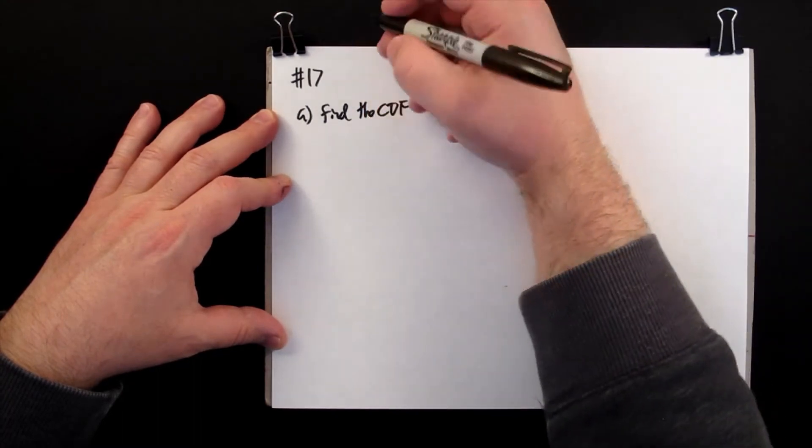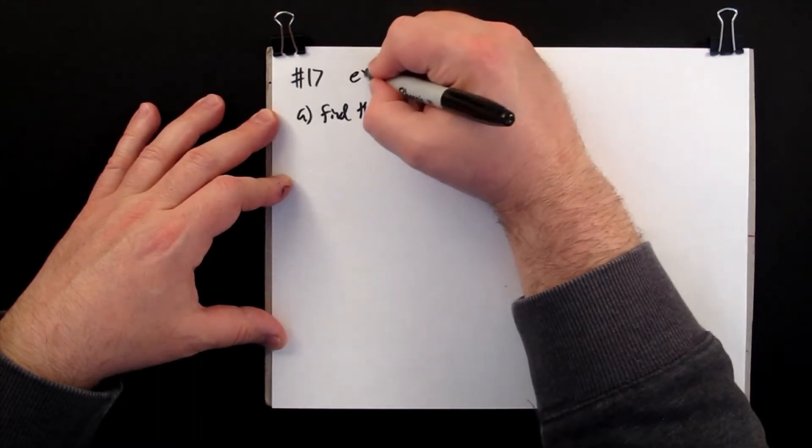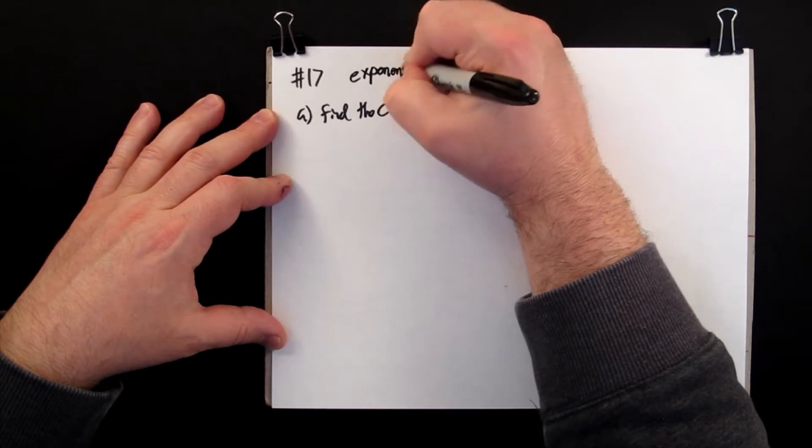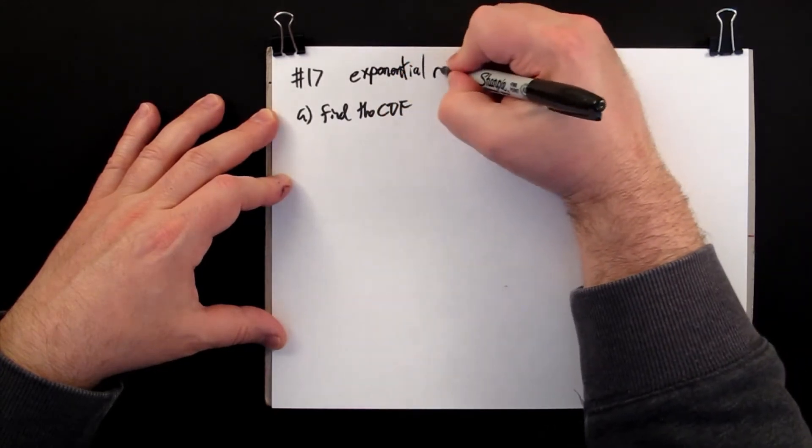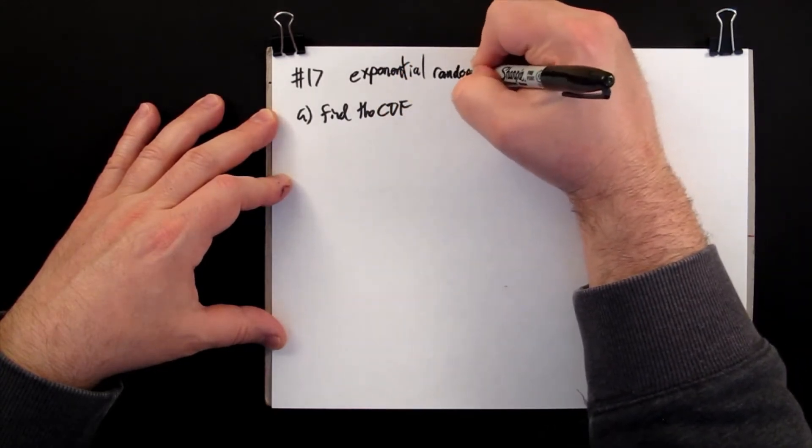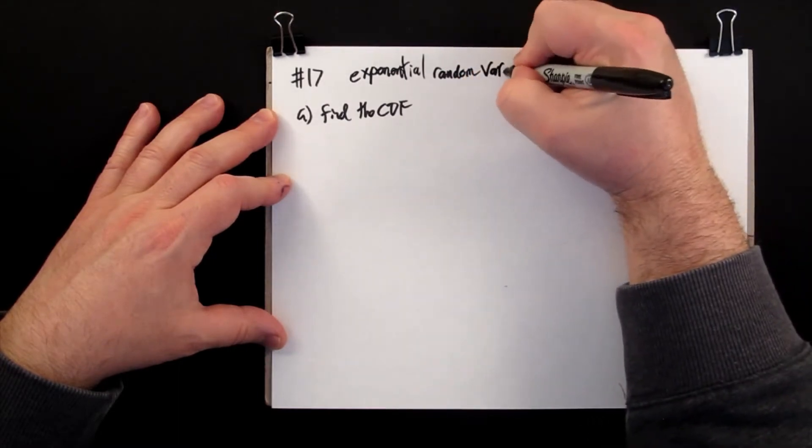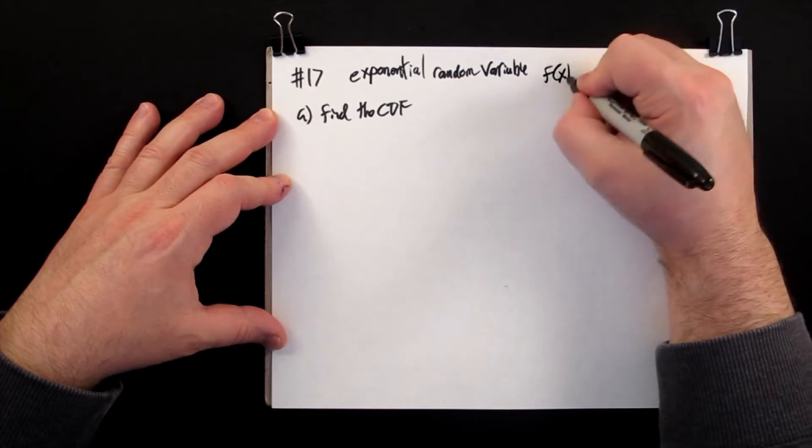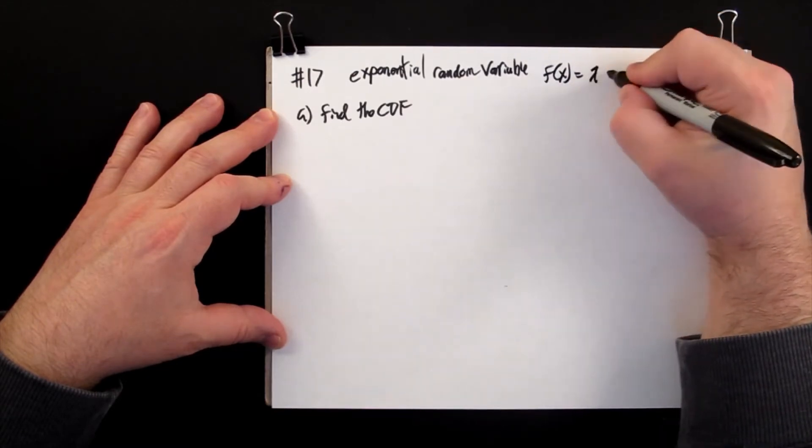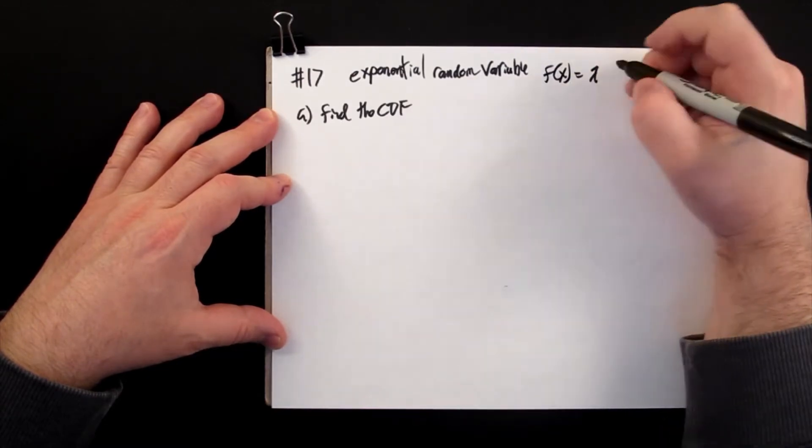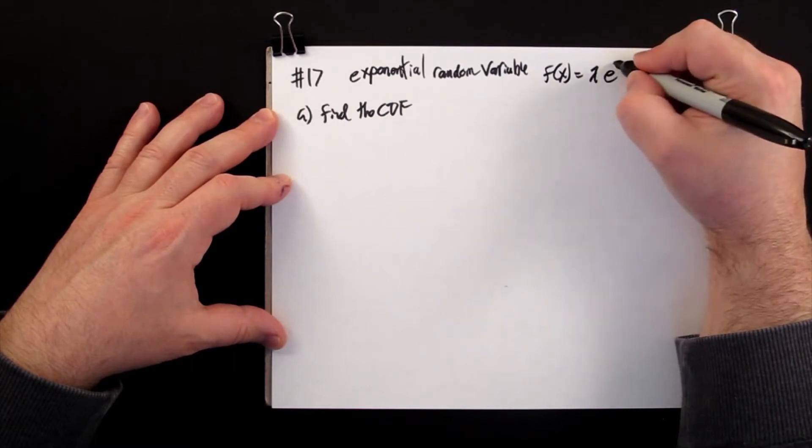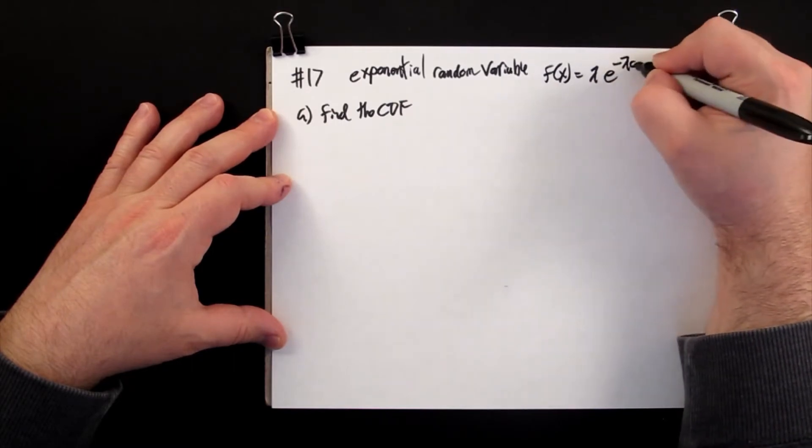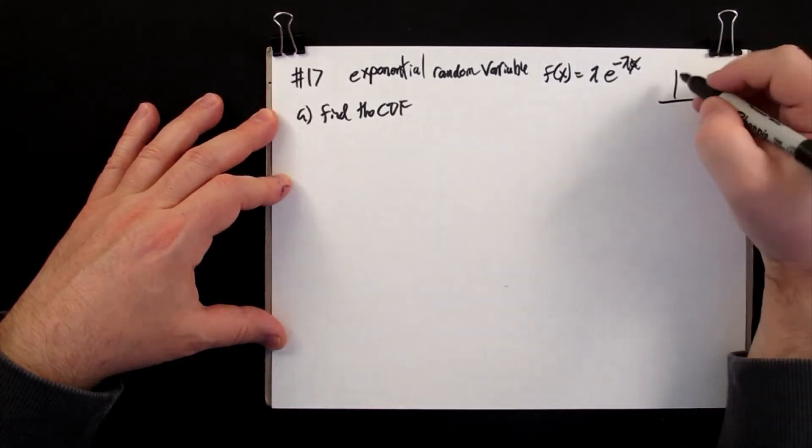Our distribution that we're starting with is an exponential random variable. What this means is that the general PDF for this is lambda e to the minus lambda x, and it's going to be shaped like this.